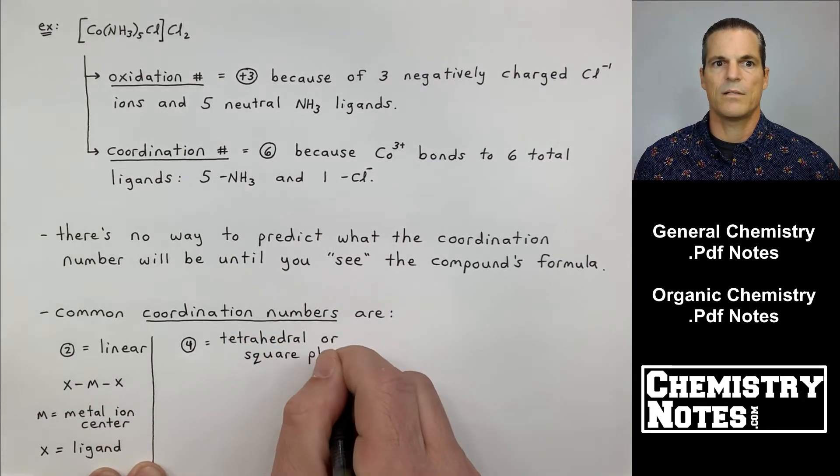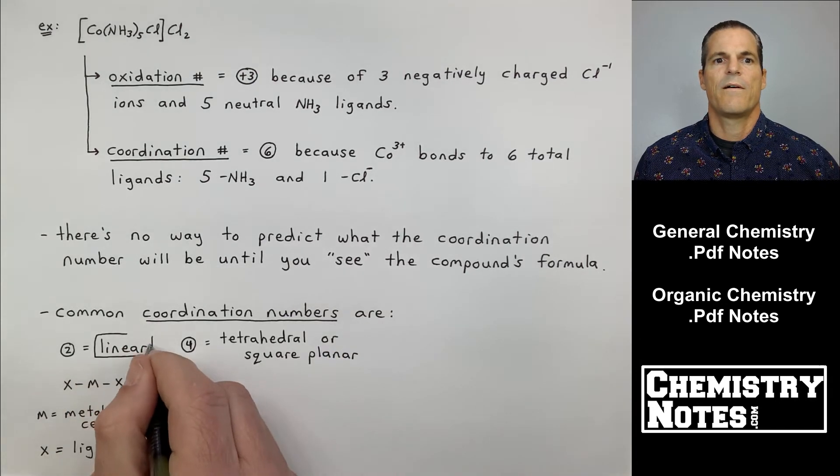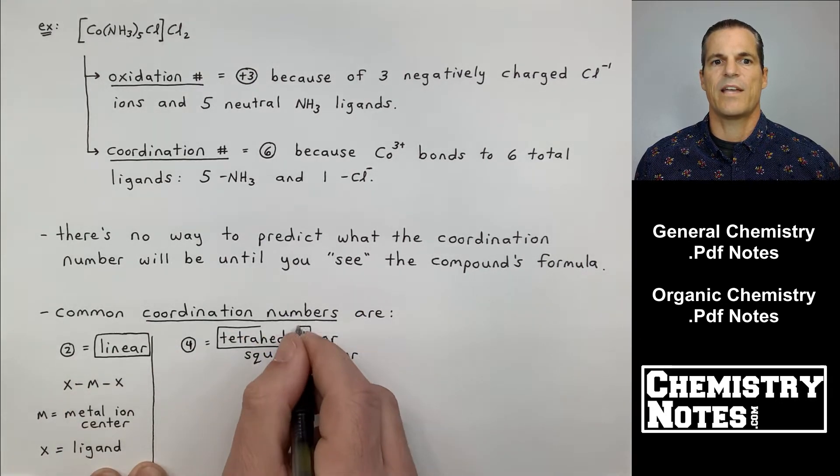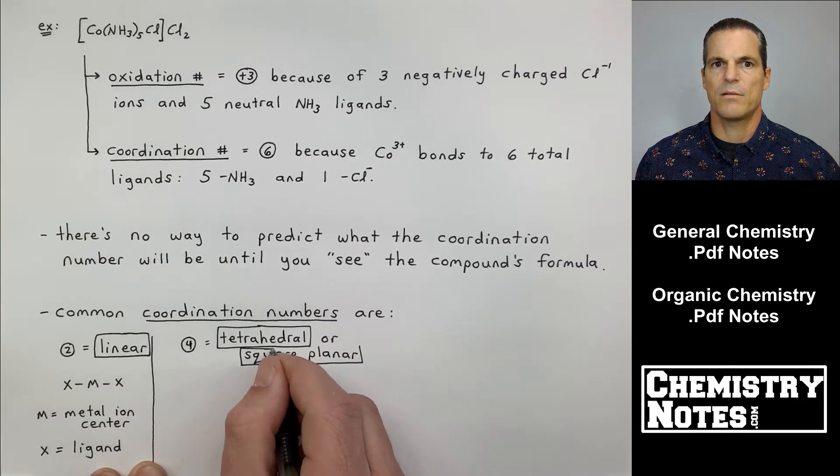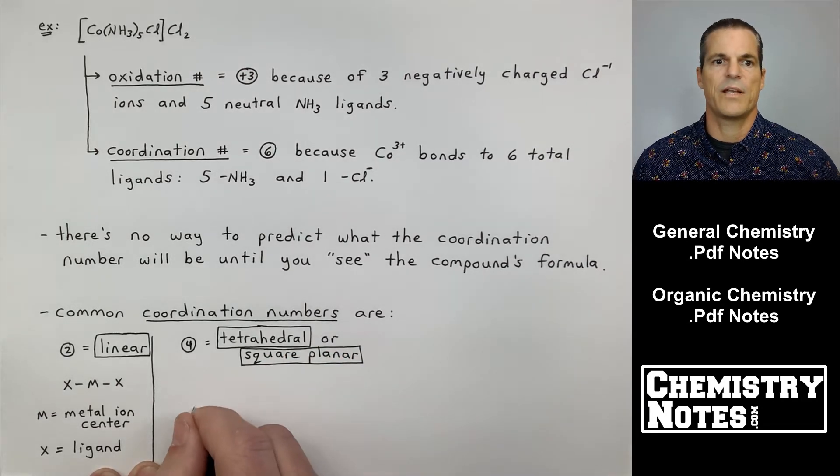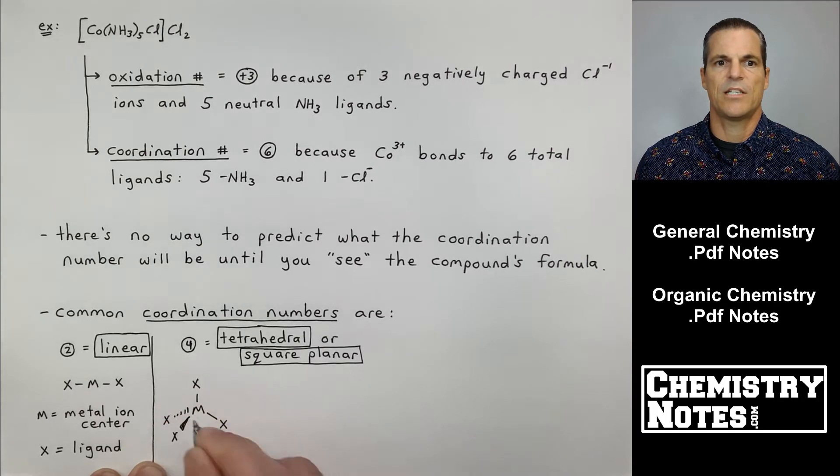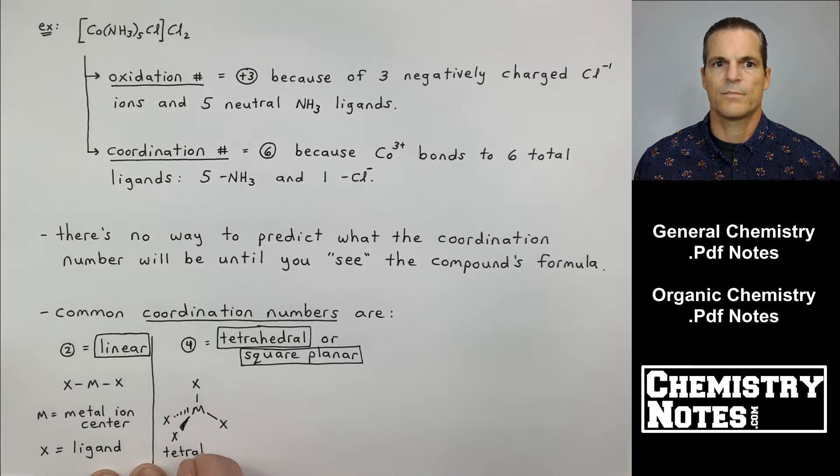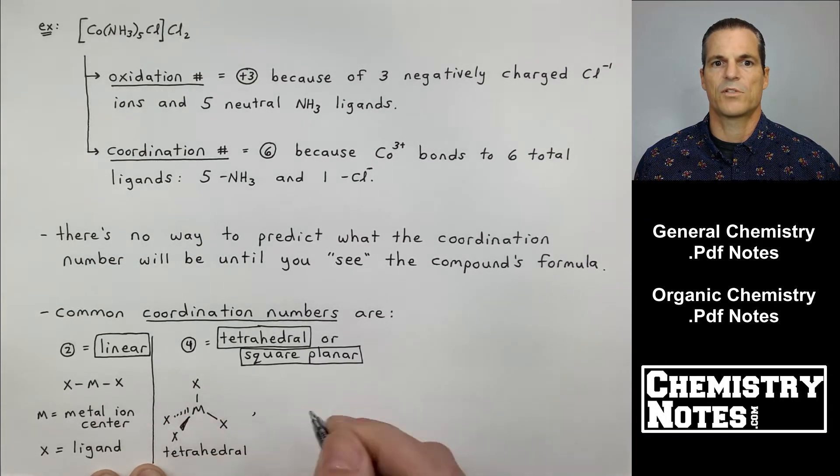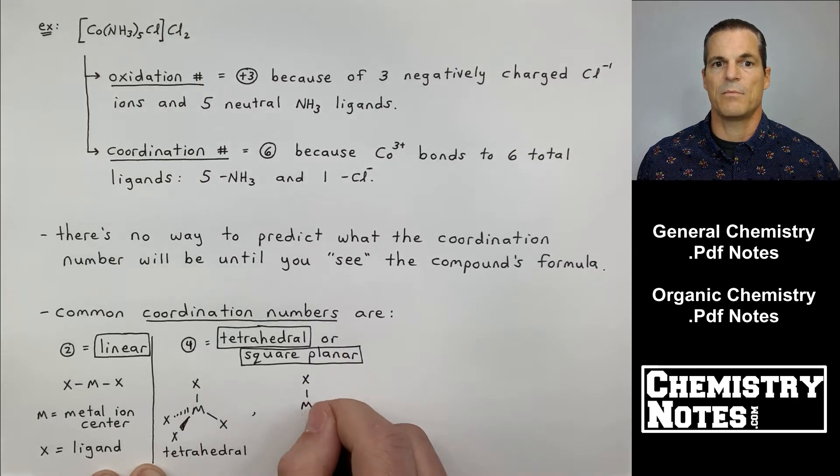Four is also a common coordination number. If you have four ligands, you're generally going to have a tetrahedral arrangement or square planar arrangement. So the one I'm drawing here on the bottom left is a typical tetrahedral structure. And if I wanted to do square planar, I'll just go ahead and keep mine in the plane of the paper.